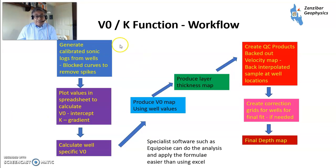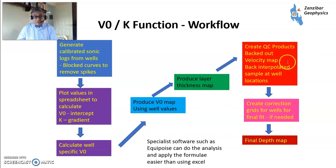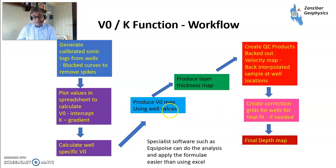The workflow for V0K: get your sonic logs, plot your variables, get your V0 and K. Some software packages, particularly Valet, allow you to do all of that without exporting to a spreadsheet. Calculate V0 for specific wells, produce a V0 map, produce a layer thickness map, create backed-out velocity maps, do various corrections for quality control, and then you end up with a final depth map. In a stochastic depth conversion, you do your V0 map stochastically — instead of a single deterministic realization, you have variograms, nuggets, et cetera, and produce a set of realizations of the V0 map to get your stochastic figures.